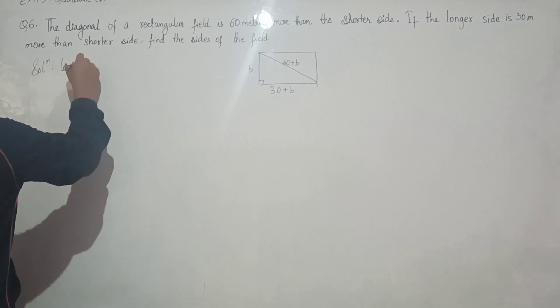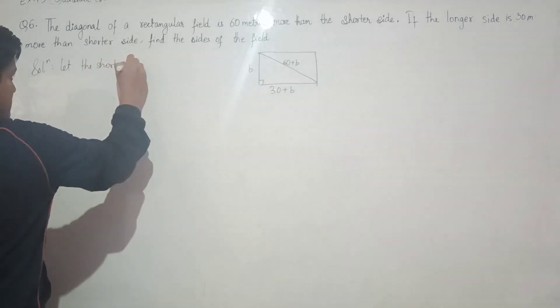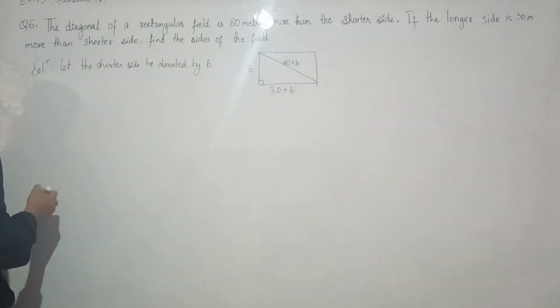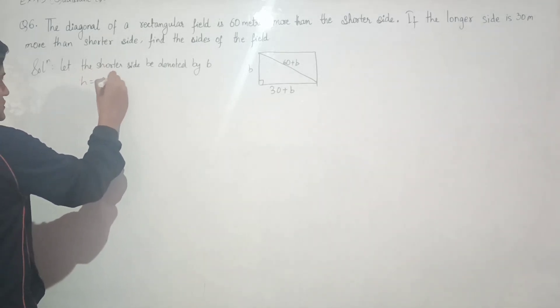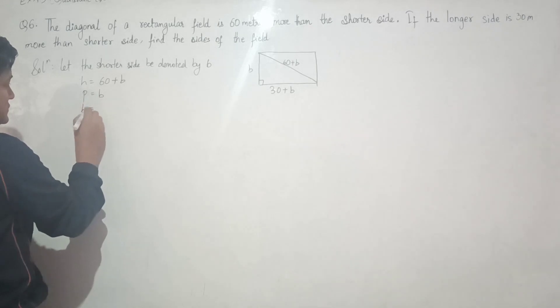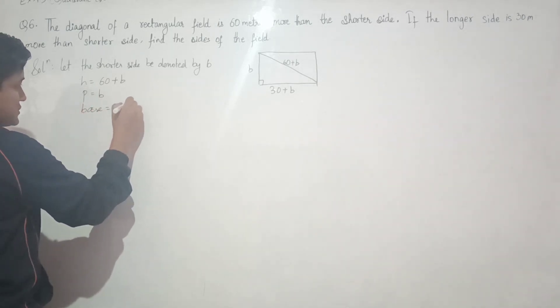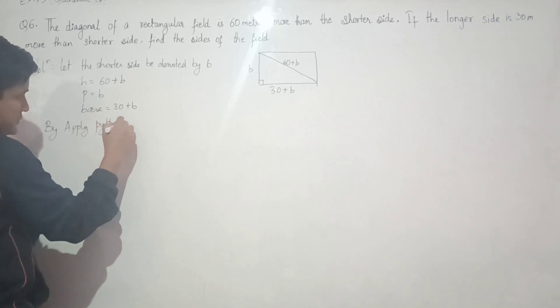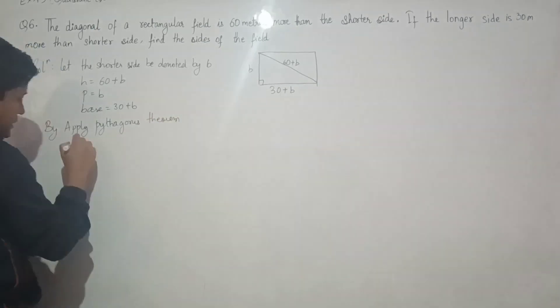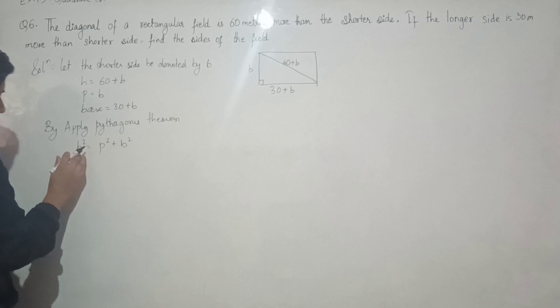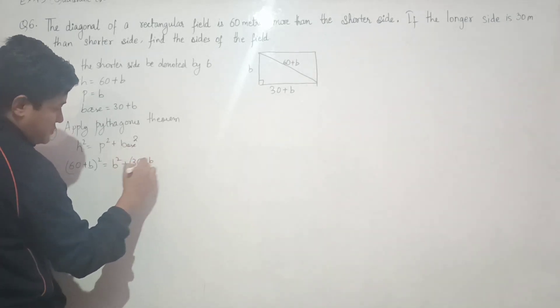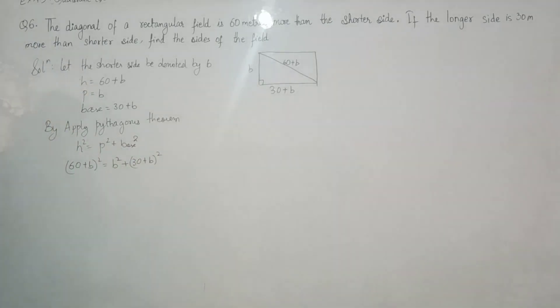Solution: Let the shorter side be denoted by small letter b. Then hypotenuse equals 60 plus b, which is the diagonal. The perpendicular is b, and the base is 30 plus b. By applying Pythagorean theorem, h squared equals p squared plus b squared. So 60 plus b whole squared equals b squared plus 30 plus b whole squared.